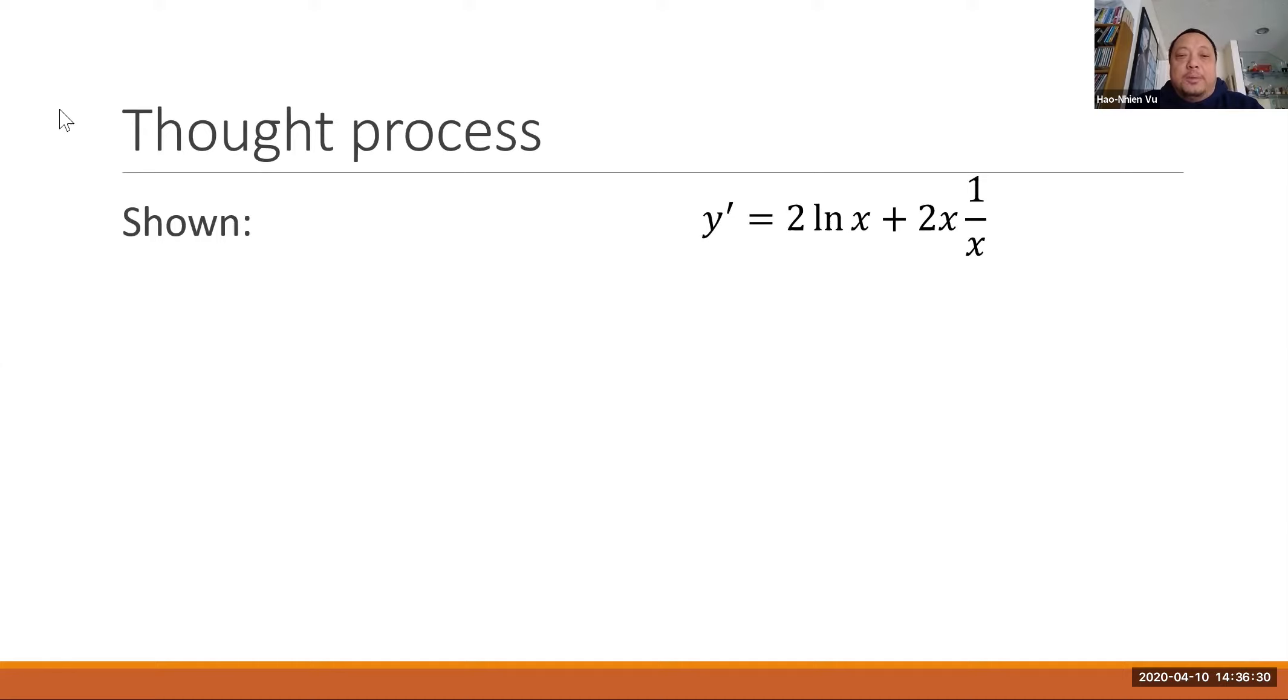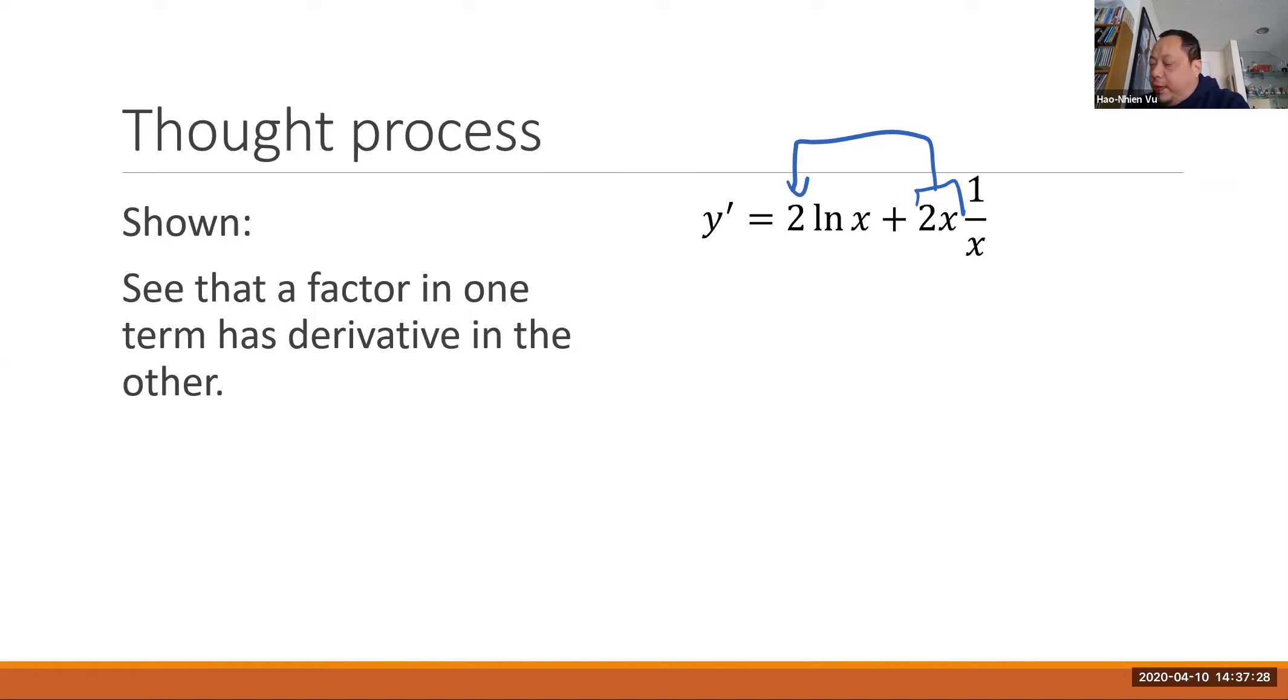Alright, so let's say you play this game and your friend shows you y prime with the two ln x plus two x times one over x. And you're supposed to figure out what the y function was. So the first thing you do is you recognize that a factor in one function or one term has a derivative in the other. The factor of two x in the second term has a derivative of two in the first term and the factor of ln x has derivative of one over x in the other term.